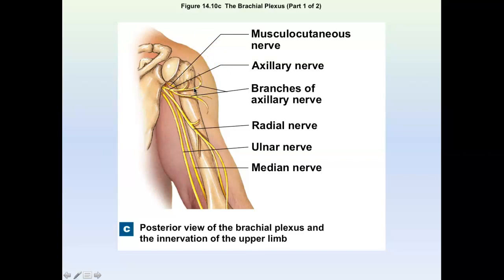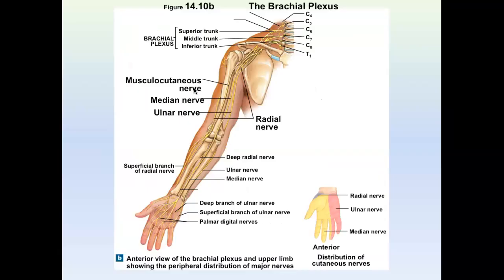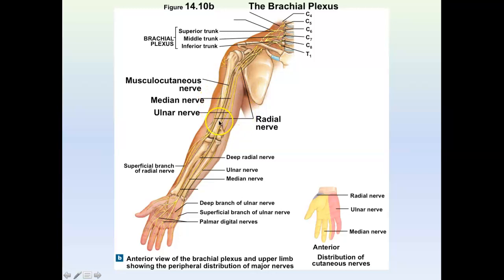The second one is called the musculocutaneous nerve. The musculocutaneous nerve is going to go down the anterior arm and serve the anterior arm muscles: the biceps brachii, the brachialis, and the coracobrachialis. Any sensation from the anterior arm is going to be carried to your brain via this musculocutaneous nerve.